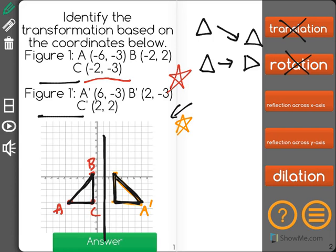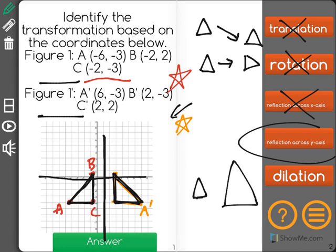We could have a reflection across the x-axis, which is the horizontal axis, which we did not have. We did have a reflection across the y-axis. Or we could have had a dilation, where we had one shape that started and then it ended up much larger. In this case, the correct answer is a reflection across the y-axis.